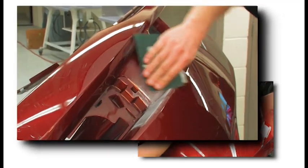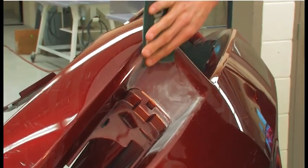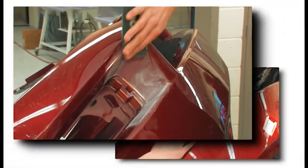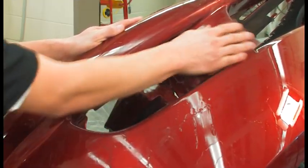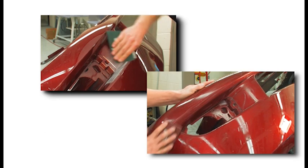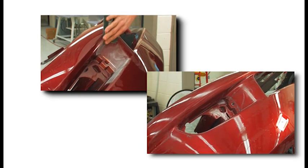The 3M Flexible Abrasive Sheets can be used dry or wet. Using the abrasive dry will allow the technician to see while sanding. Using the abrasive wet will reduce loading. The option is open, depending on user preference and application.